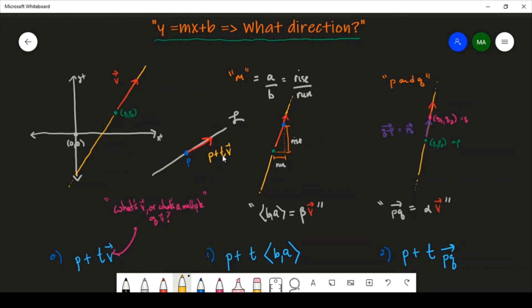And then now one thing to first talk about is that V really doesn't matter in the sense of which V you choose. The only thing you have to choose is a multiple of V. And so what you can also have here is P plus T times any non-zero multiple of V. And that's what you're going to get anyway.